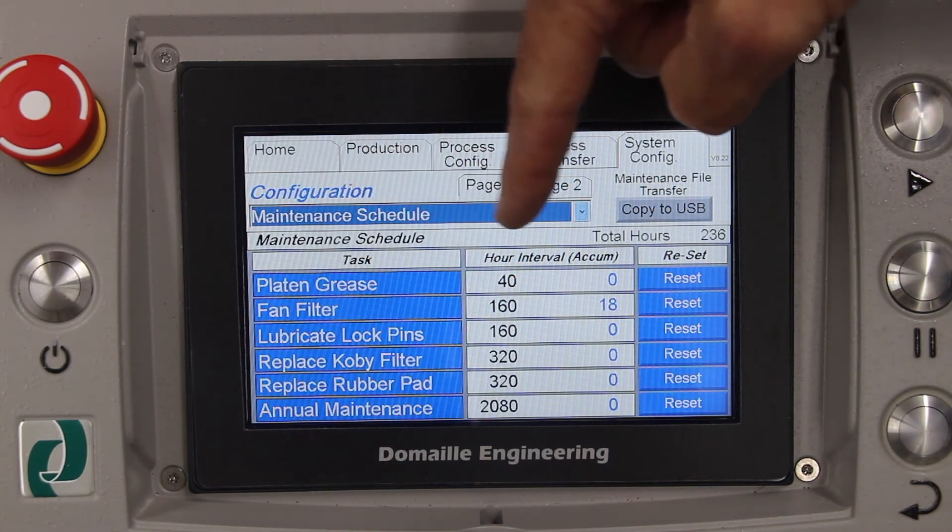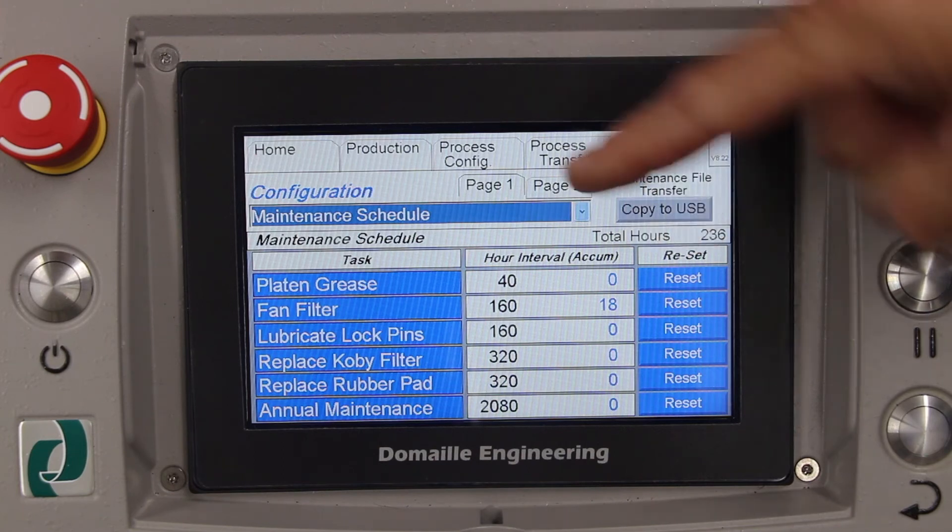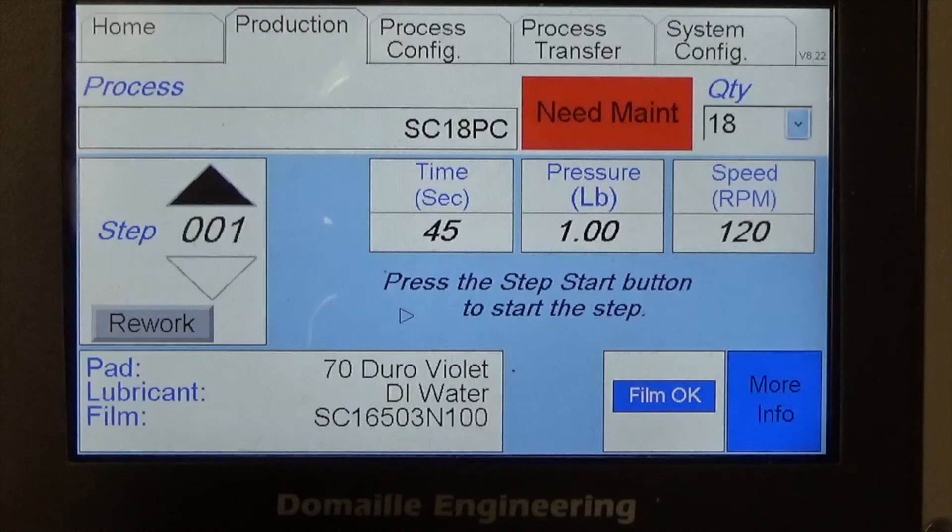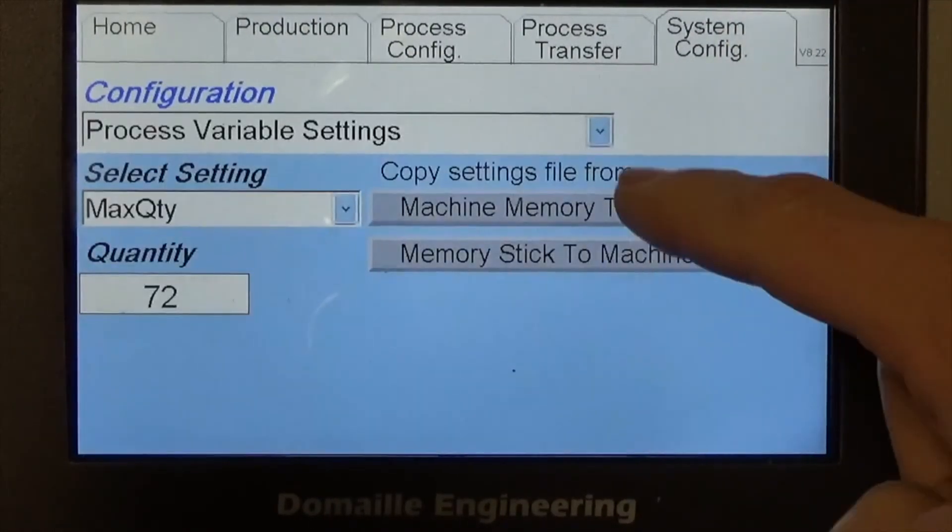The System Configuration tab stores general items such as maintenance and calibration alarms. Alarms alert the operator to maintenance items so they can be performed as required.